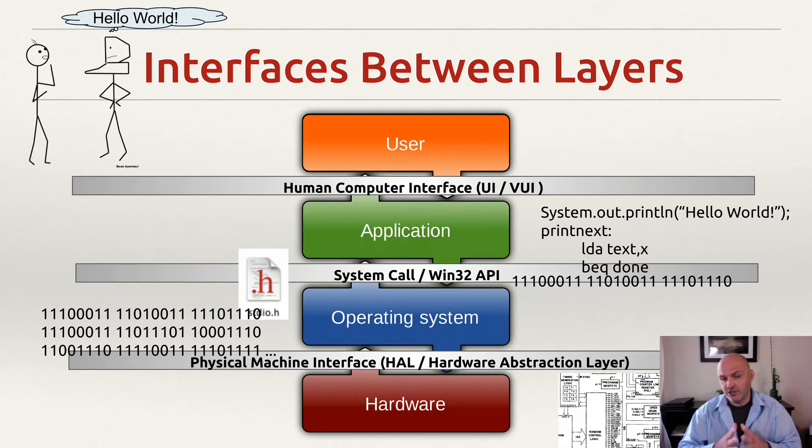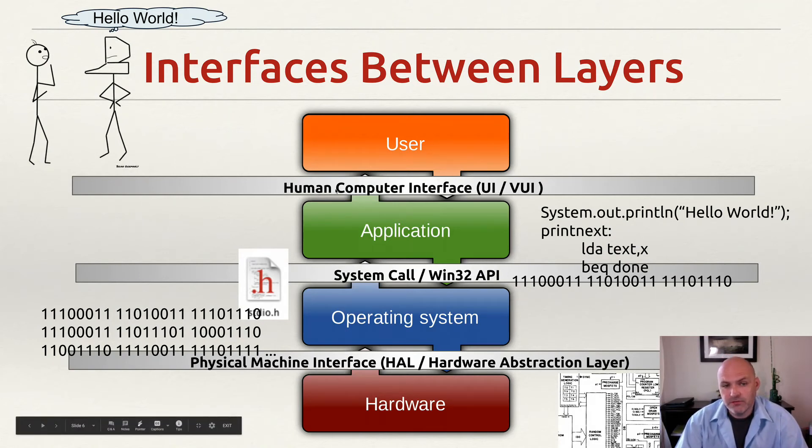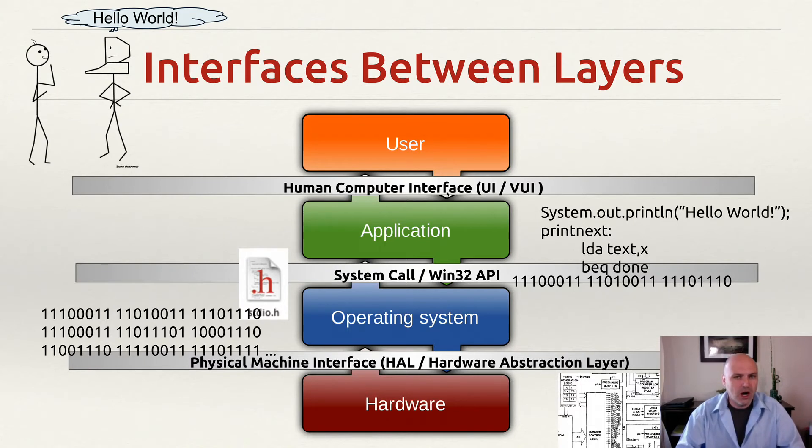So from the user to the application, we have something called the human-computer interface here. This is what you think of as your UI. It could be a voice UI. There's all kinds of UIs nowadays. But a UI is a user interface. And this is why there's so much thought given to this.